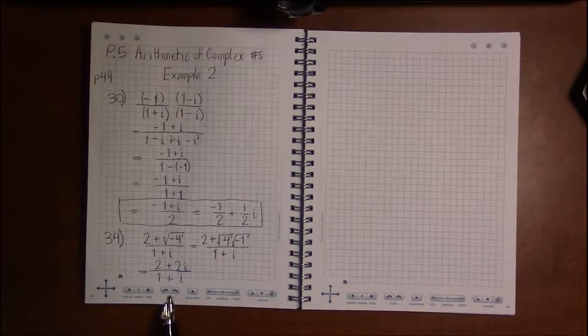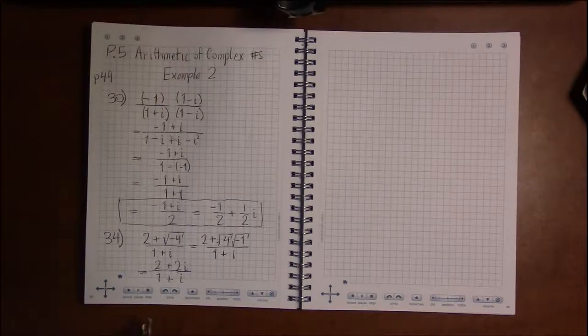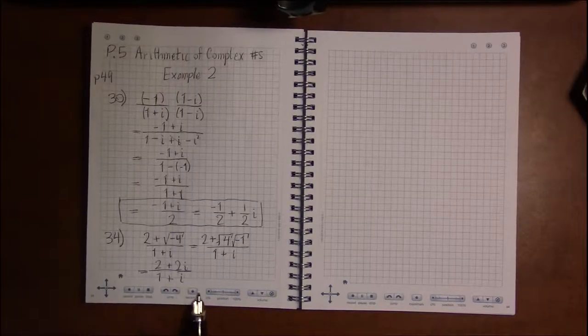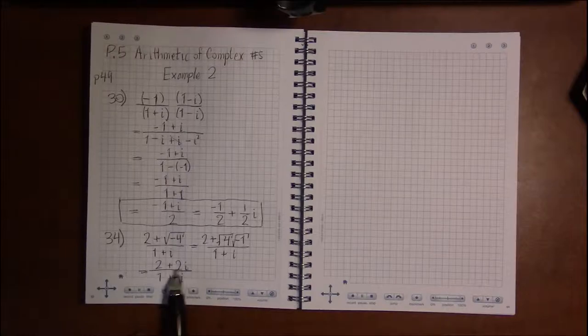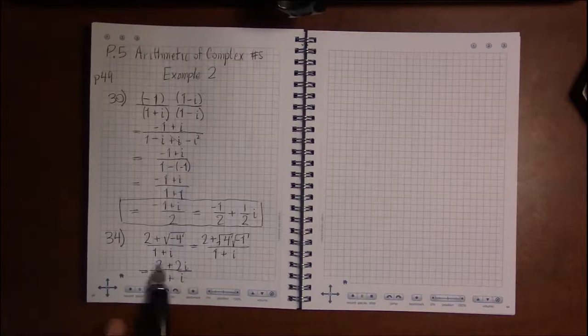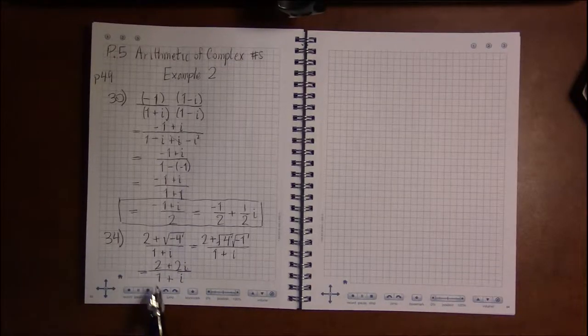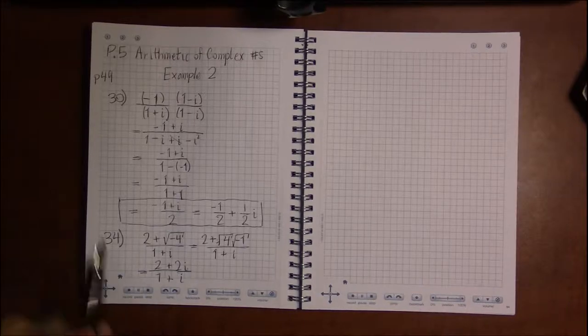Now I can already tell based on this the answer we're going to get is 2, and you can see that if you think about factoring a 2 out of the numerator here. But because I'm trying to demonstrate division by complex numbers...